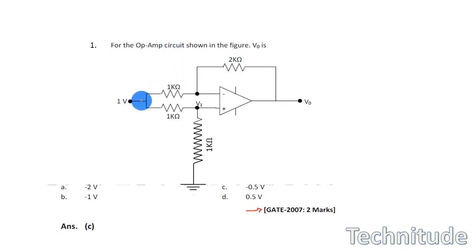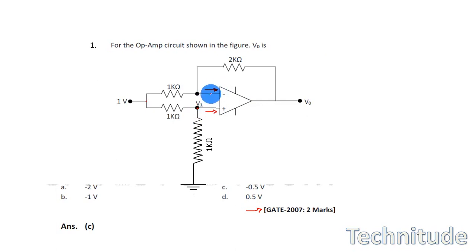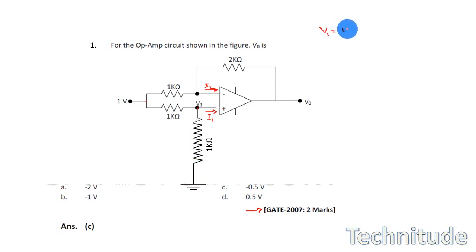The first question is related to the ideal operational amplifier. If one volt is given here, how much output voltage will we get? The simplest method uses our rules. First, currents i1 and i2 are zero in an ideal operational amplifier — that is rule number one. Since zero current flows, we can treat this branch simply as a potential divider. V1 is simply 1/2 volts because equal resistances of 1kΩ and 1kΩ give half the voltage at that point.